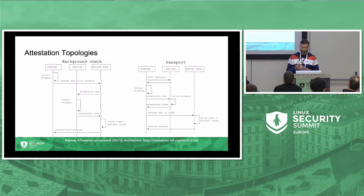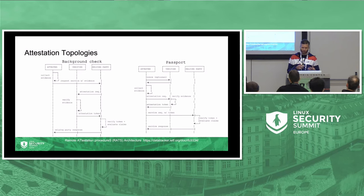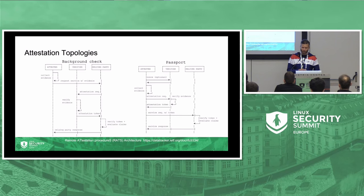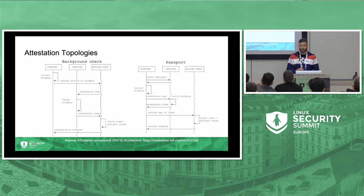The relying party can do final checking and evaluate the attestation results against custom local policies before responding to the original request from the attestor. In passport mode it works slightly differently: the attestor talks to the verifier directly, potentially including a nonce for freshness. The attestor collects the evidence and sends the attestation request to the verifier. The verifier returns an attestation token back to the attestor, and that token is what the attestor uses with relying parties — essentially saying, I have my passport, verified by verifier X, and I need services from the relying party, such as a key broker service.